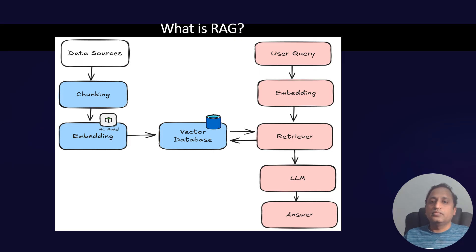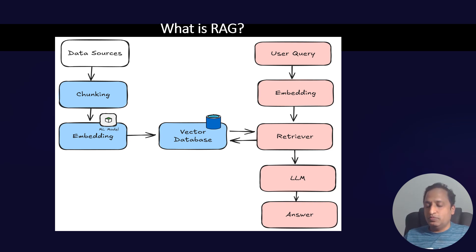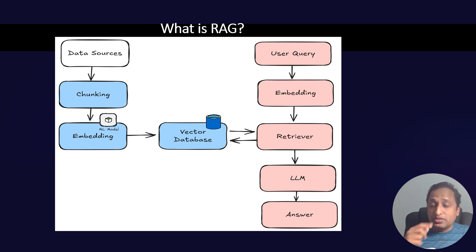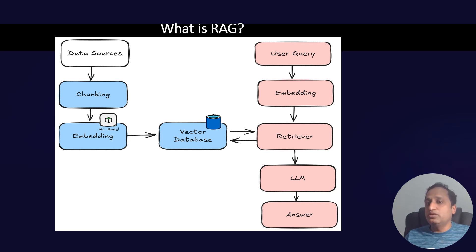RAG, or Retrieval Augmented Generation, is a revolutionary AI approach that combines retrieval-based search with generative AI to provide more accurate and contextually relevant responses. The step-by-step architecture begins with chunking — you take a large document like a PDF file or conference pages and break it into small meaningful pieces. Too large and you risk missing key details; too small and the contents get lost. A balanced chunk size ensures efficient retrieval.